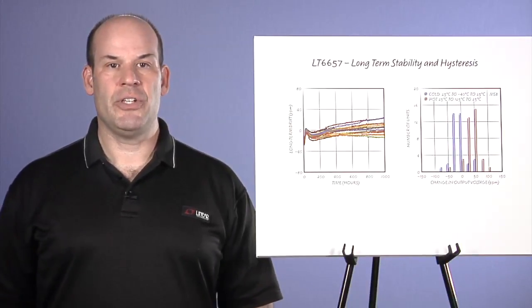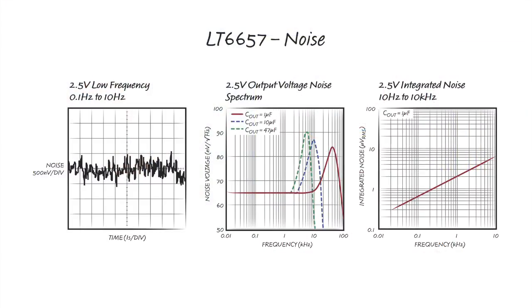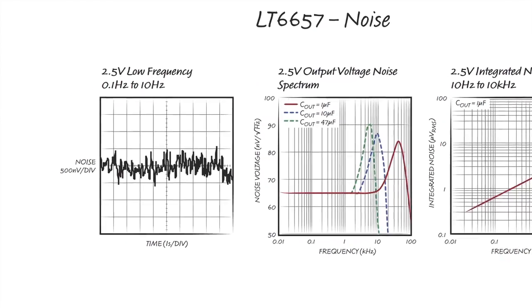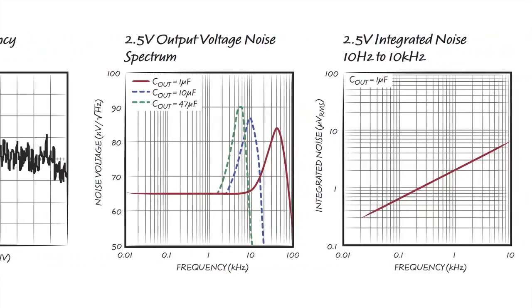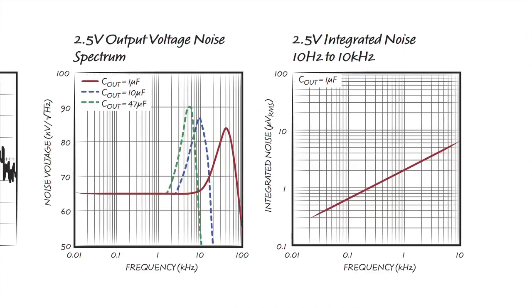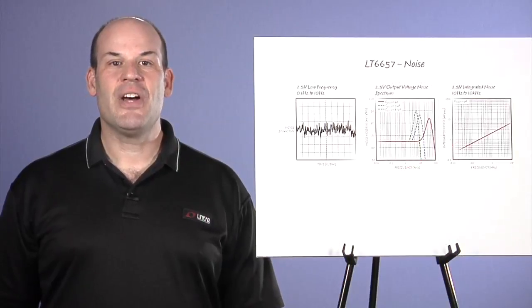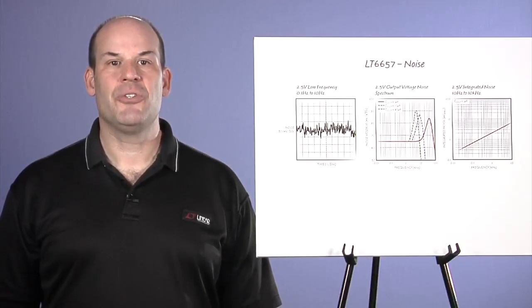With LT6657, noise performance is comparable to some of the best low noise buried zener references. At only 0.5 ppm, the noise is appropriate for many high dynamic range systems. LT6657 produces only 1.25 microvolts peak-to-peak noise in 0.1 to 10 hertz for a 2.5 volt reference. Wideband noise is also low at 0.8 ppm RMS to 1 kilohertz.